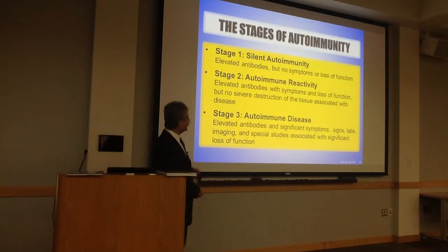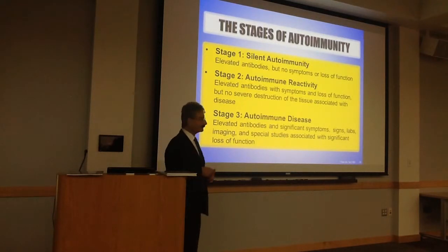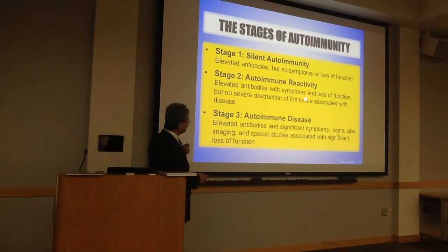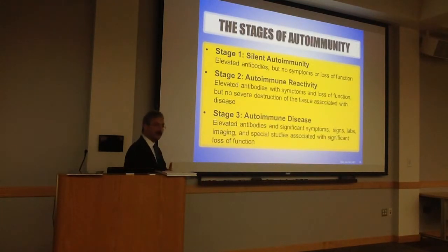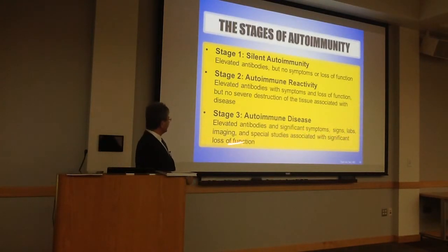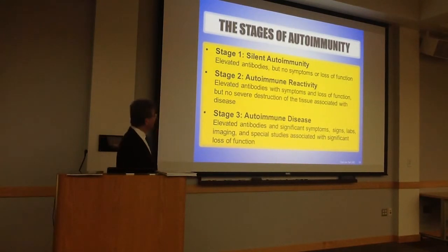There are three stages in autoimmune disease. The first stage we call silent autoimmunity: you went to your doctor, the lab found antibodies. Antibodies are not equal to a disease — but maybe ten years later. The second stage: elevated antibodies with symptoms and loss of function, but no severe destruction of tissue yet. When this continues, the patient will have significantly elevated antibodies, significant symptoms and signs, and many other clinical findings — and maybe at that point it's too late to do something. That's why we have to detect it at stage one or stage two.